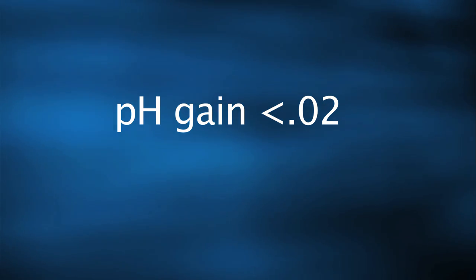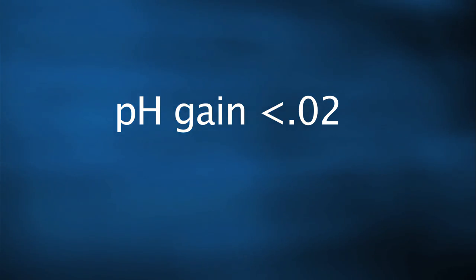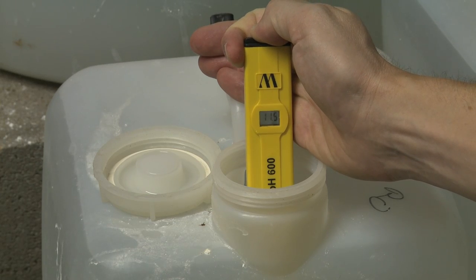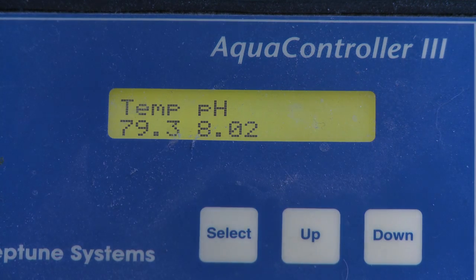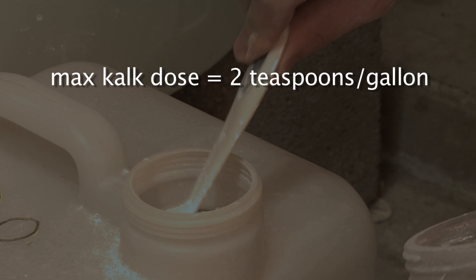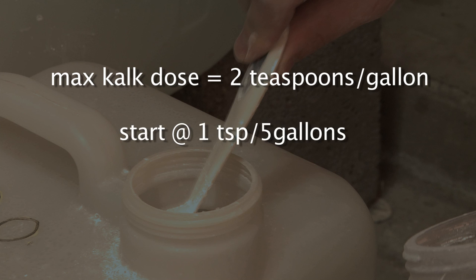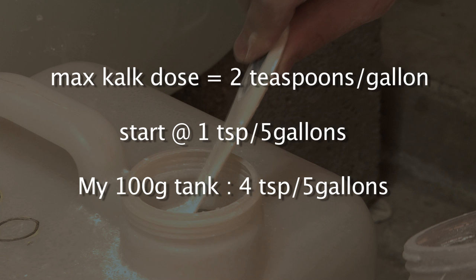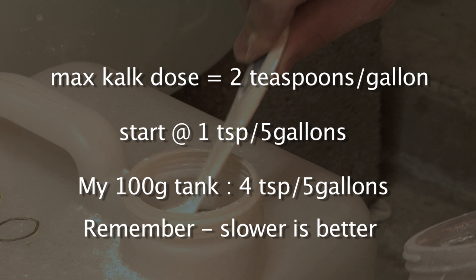So how do I find out what solution of calc is right for my tank? The first thing to know is that you don't want your pH to go up more than 0.02 whenever your auto top off runs. pH test kits can't measure such a small change, so you have to use a pH pen like this one, or a pH probe on your controller. Since 2 teaspoons per gallon is considered a saturated calc solution, I recommend you start with 1 teaspoon per 5 gallons and see how it affects your tank. If your pH swing is less than 0.02, feel free to go up. For my 100-gallon tank, I use 4 teaspoons per 5 gallons. Keep in mind you want to make any changes slowly — try running a low concentration for a week and see how your corals and tank react.